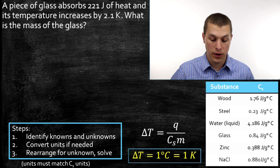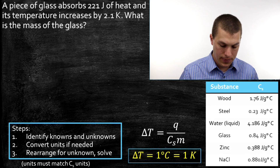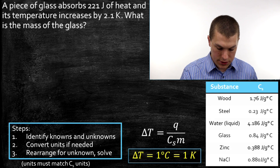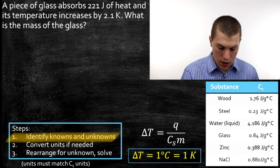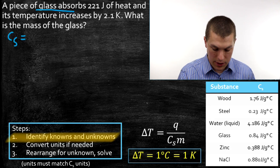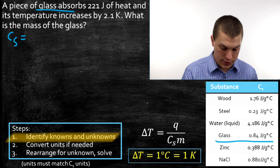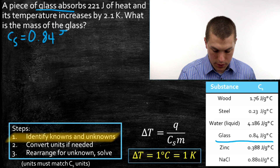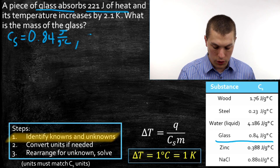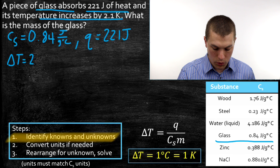Now let's calculate mass — another common heat capacity problem. We'll know the heat added, the change in temperature, and the material, which allows us to calculate the mass. Step one: identify knowns and unknowns. The problem says we have glass, so right away that tells us our specific heat capacity. From our table, glass has a heat capacity of 0.84 joules per gram degree Celsius. It absorbs 221 joules of heat, so Q equals 221 joules. The temperature increases by 2.1 Kelvin, so delta T equals 2.1 Kelvin.